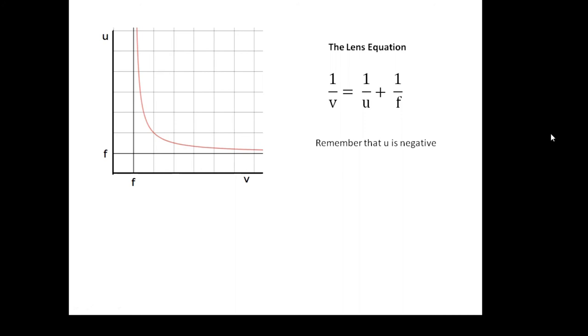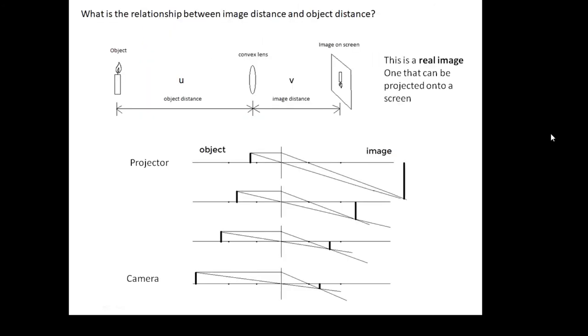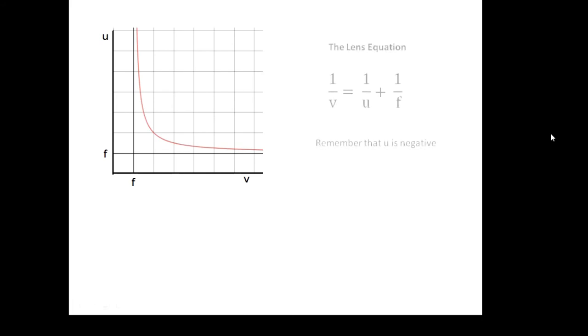The lens equation—a very important equation: one over v equals one over u plus one over f. One thing you must remember is that u is negative. Now, why is u negative? If you imagine it was a graph and the horizontal distance was x, then everything right of the origin would be positive and everything left of the origin would be negative, like Cartesian coordinates. So any distance left of the lens, which is the origin, is negative, and that's why u is negative. Remember that u is negative.